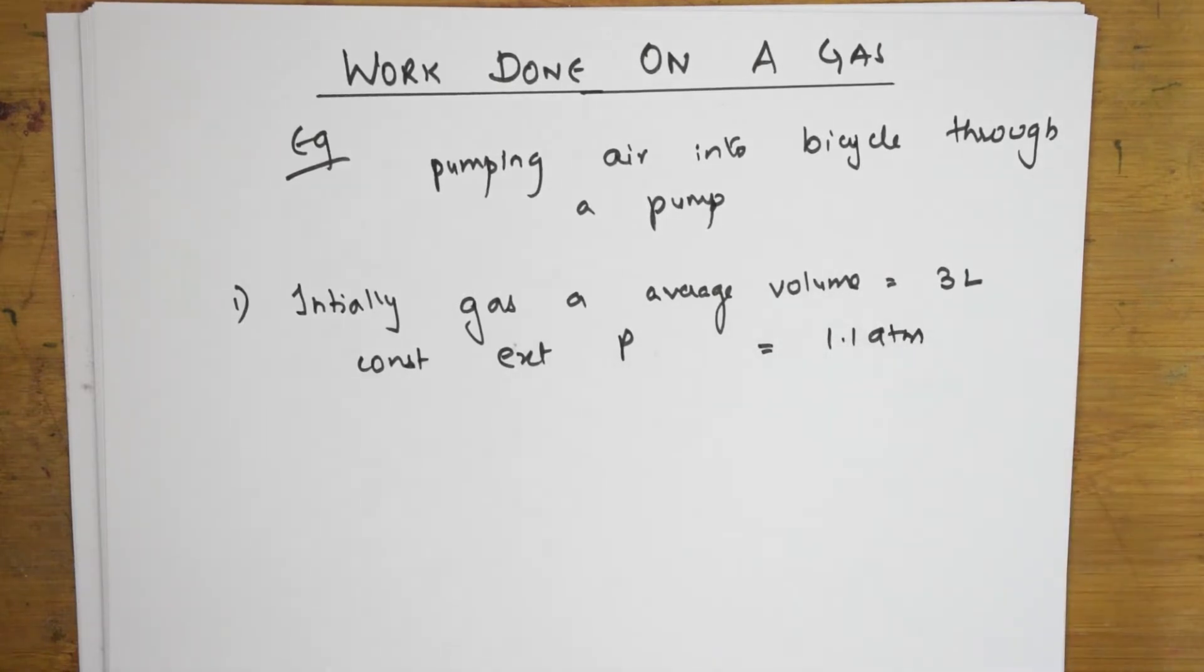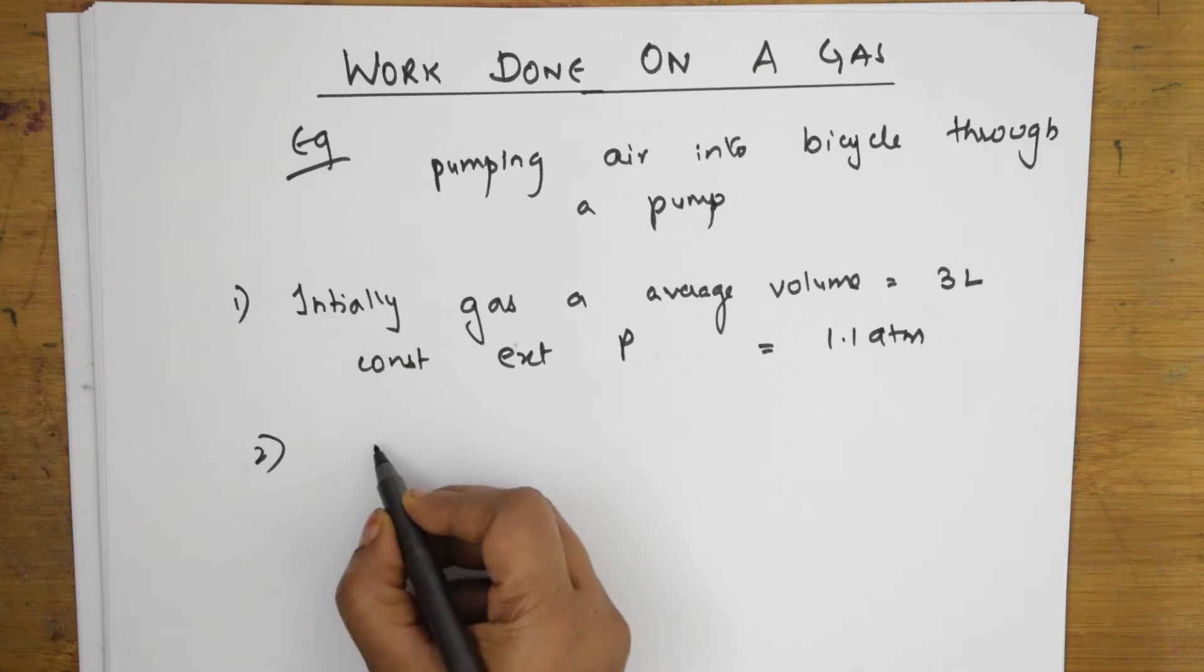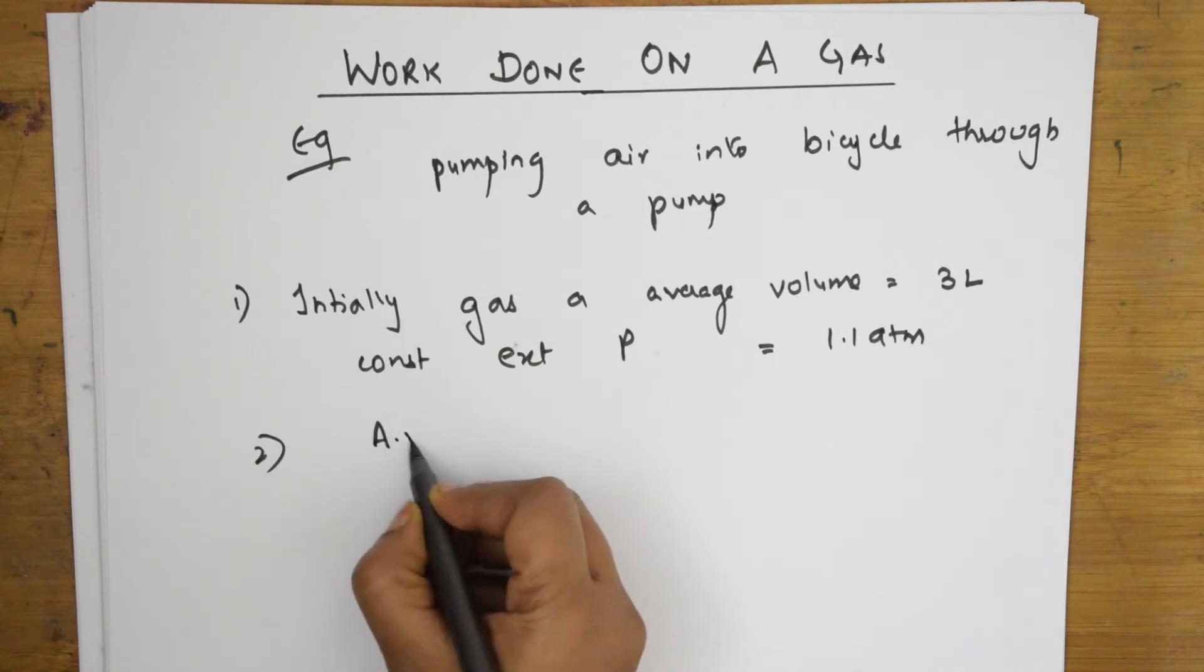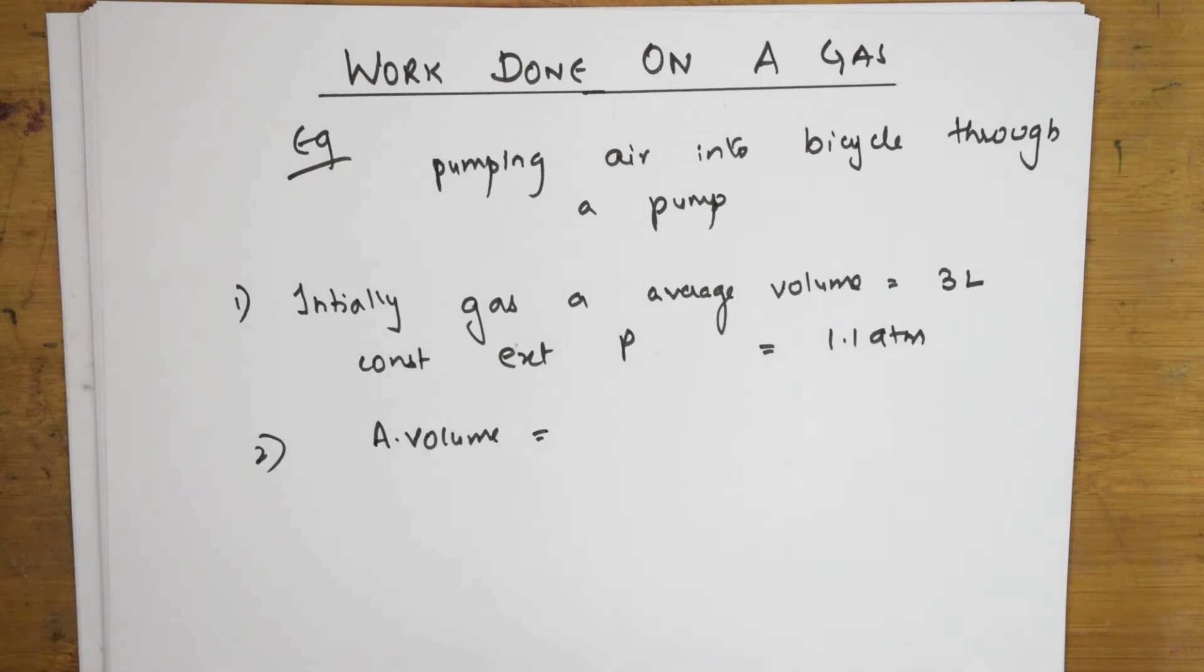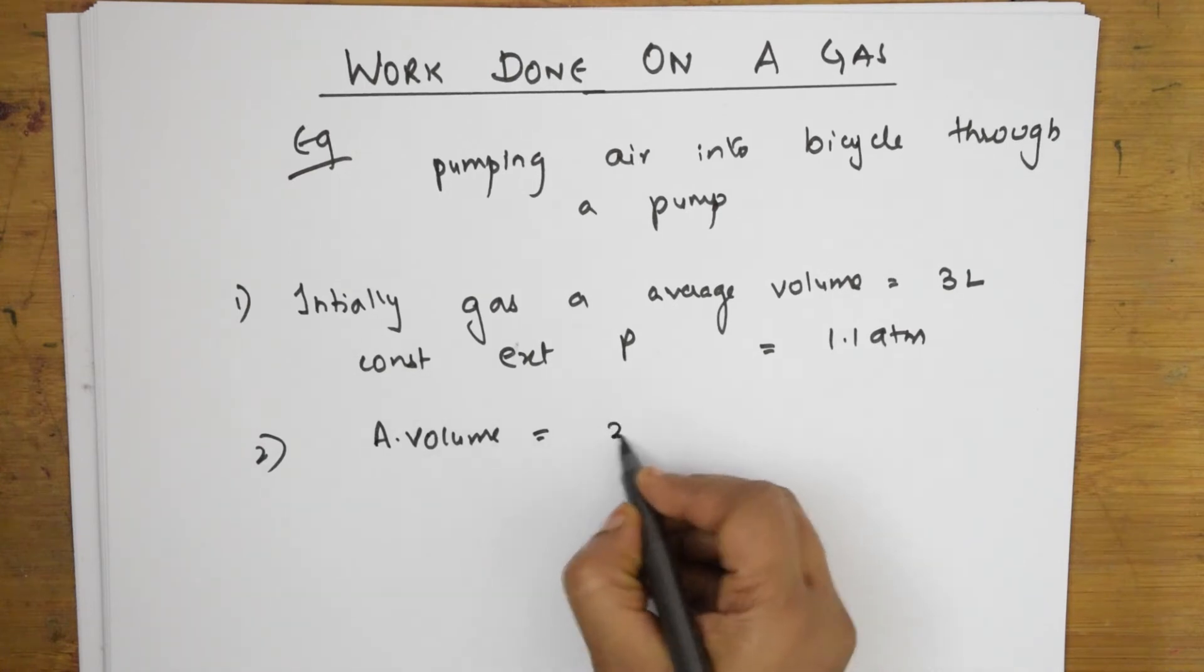So, I am using 1.1 atm to push the handle. I am pushing that handle. The pump. When I am pushing that handle with this so much of pressure, what will happen now? The average volume whatever was there because I have applied pressure on that pump and I am pushing in air inside. From 3 liters, the pump or the volume has reduced to 2.5 liters.